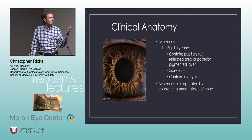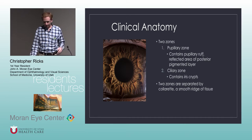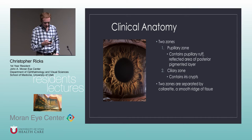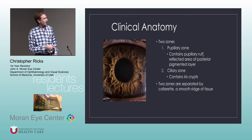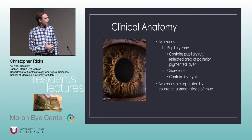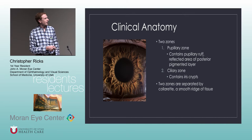There are two main zones. The pupillary zone, which contains the rough and the reflected area of posterior pigmented area. Then you have the ciliary zone, which is on the outside of the rough. It contains iris crypts, and they're separated by the colorette, which represents the blood vessels running through the iris.